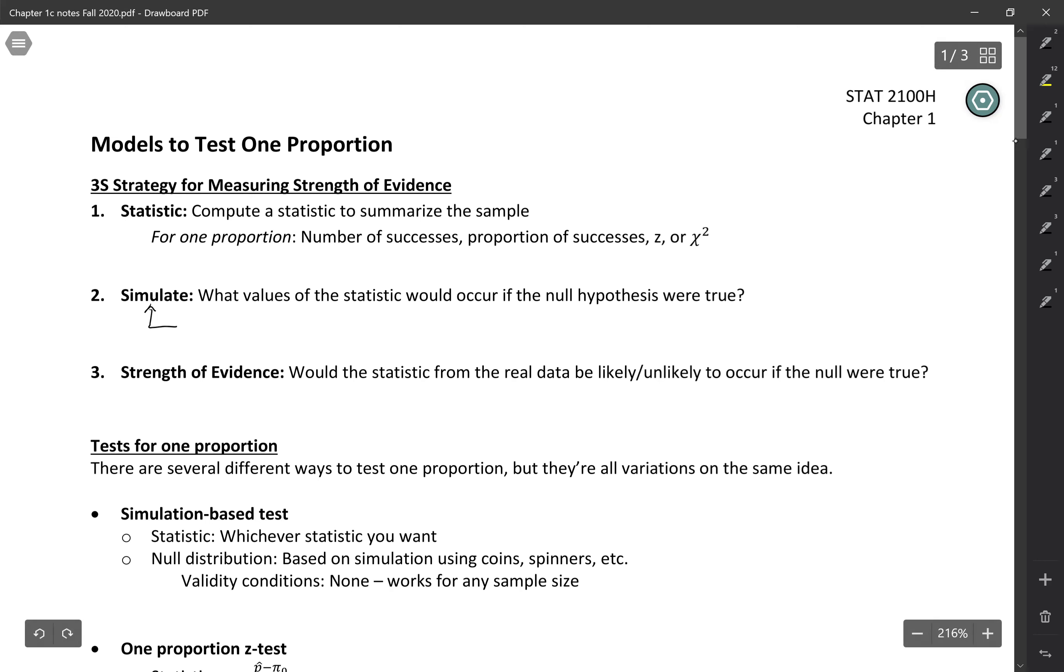But there is another option instead of using a simulation, the other option is to use a theory-based model. The idea there is that you're going to predict the outcomes that a simulation would give you without actually doing the simulation. If you want to use a theory-based model, you have to make sure that certain validity conditions are met, but if they are, you can skip the step of a simulation and just use theory to calculate the p-value.